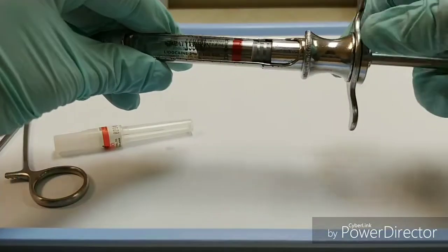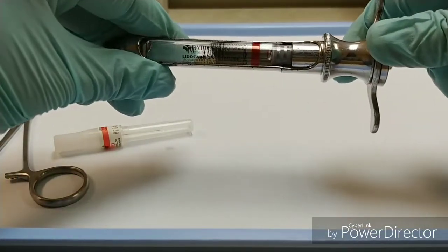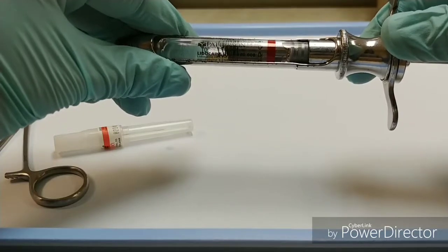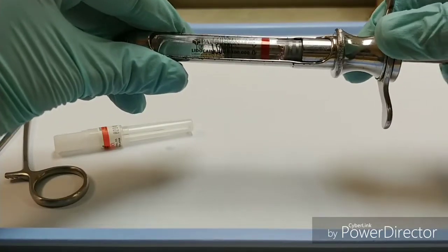Now I'll check that it's properly engaged by retracting that piston again. You should see kind of what I'm seeing here, where that cartridge can move along with the piston.